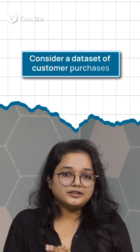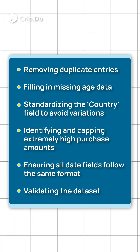Consider a dataset of customer purchases. The cleaning process may involve removing duplicate entries for customers who made multiple purchases in the same session, filling in missing data with the median age of other customers, standardizing the country field to avoid variations like 'USA' and 'United States', identifying and capping extremely high purchase amounts as potential outliers, ensuring all data fields follow the same YYYY/MM/DD format, and validating the dataset by ensuring no purchase date is earlier than the customer registration date.